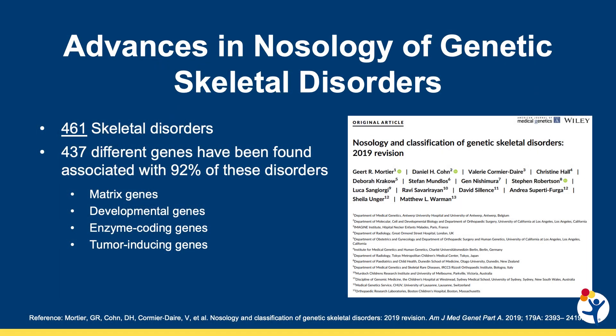Skeletal dysplasias are genetically determined disorders of bone. They result in generalized skeletal involvement, which tends to evolve with growth and time. Universally, however, they result in short stature. There are over 400 described skeletal dysplasias, of which over 90% have an identified causal gene variant.